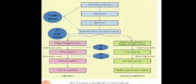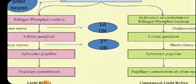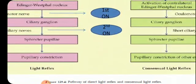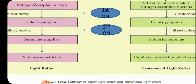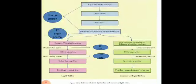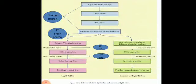Now looking at the pathway of the direct light reflex and the consensual light reflex: when light falls on one eye, the pupils of both eyes constrict — this is the light reflex. The pupillary constriction occurring in the stimulated eye is called the direct light reflex, and the constriction happening in the other eye is called the consensual light reflex.